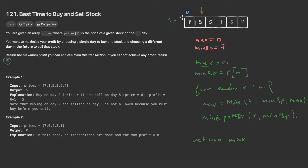Now let's do a manual execution. We have two pointers — one on the first element, one on the next. Max is zero and min buying price is seven. First, I calculate the max between the selling day (orange element) minus the min buying price (blue element): seven minus three = negative four. This is not greater than max, so we do nothing. But since three is less than seven, we update the min buying price to three.